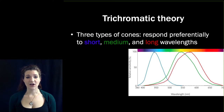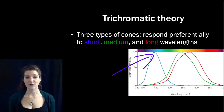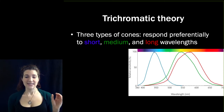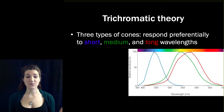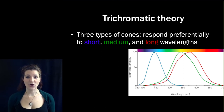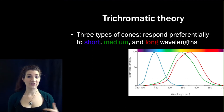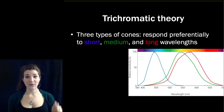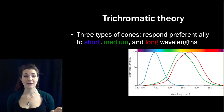This graph shows the relative sensitivity of short (shown in blue), medium (shown in green), and long (shown in red) wavelength sensitive cones. A short wavelength sensitive cone is most sensitive to about 440 nanometer wavelength light. It's useful to think of this probabilistically: 440 nanometer light striking a cone is most likely to lead to isomerization, while 500 nanometer light may still lead to isomerization but is less likely. Medium and long wavelength cones are sensitive to nearly the whole visual spectrum, just at different levels of sensitivity.